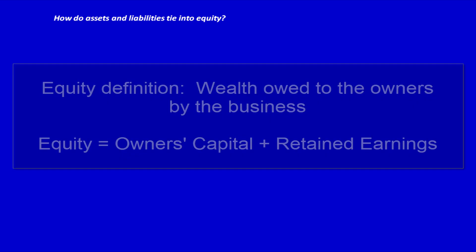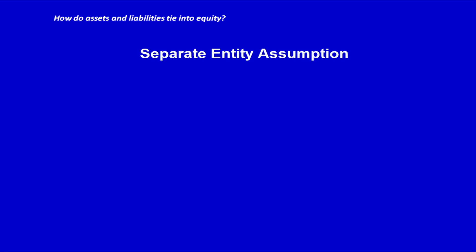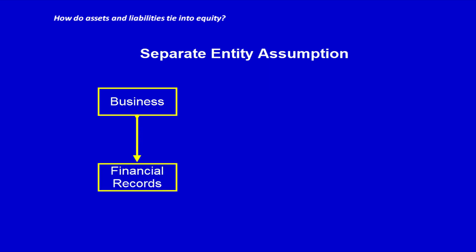How do assets and liabilities tie into equity? Equity is equal to the wealth that is owed to the owners of the business by the business. The separate entity assumption says that only the activities of the business are included in the business's financial information. It also says that the business is separate from the owners and the owners are separate from the business.